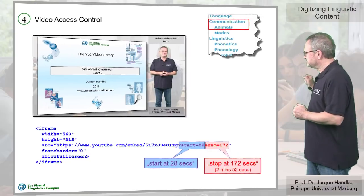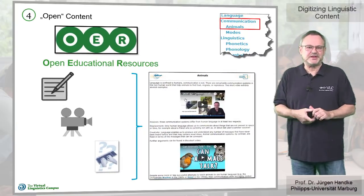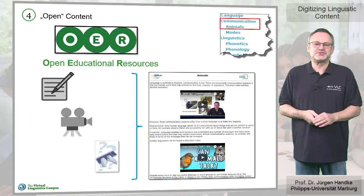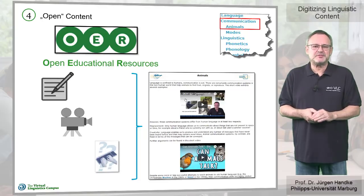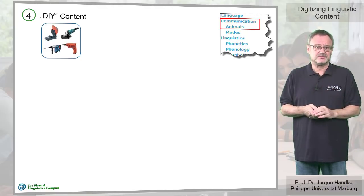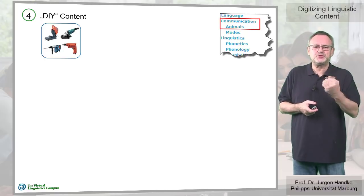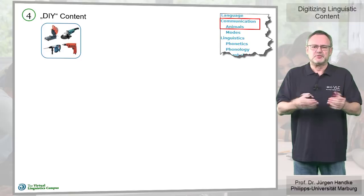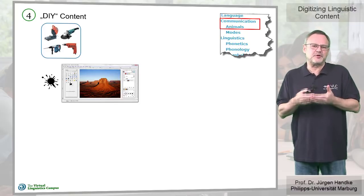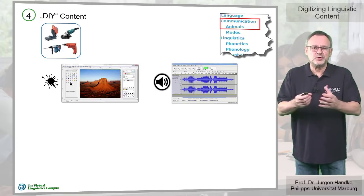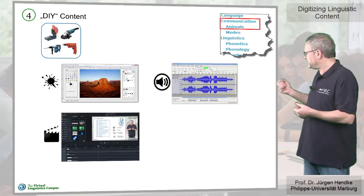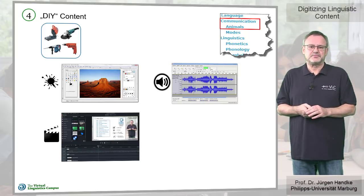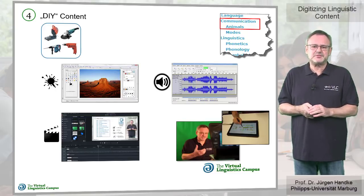In summary, open content is available and we have a variety of options to access and control it. However, there may be cases where we have to produce the content ourselves. In such cases, we have to make sure that we can produce elements beyond plain text — for example, images using imaging and photo editing software, audio files using audio editing programs, and even video with the help of video editing tools. We also need the necessary technical infrastructure and a considerable portion of media know-how.